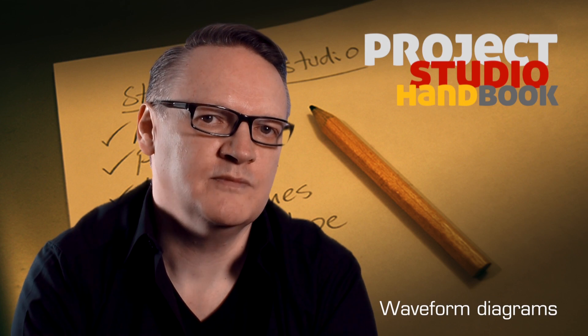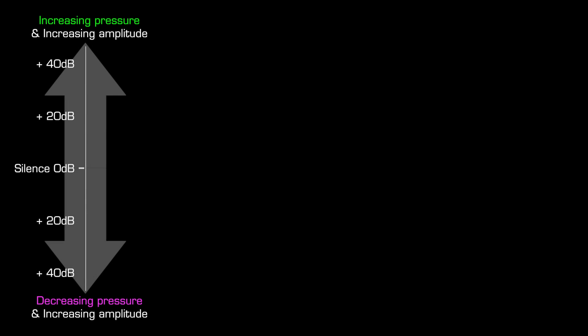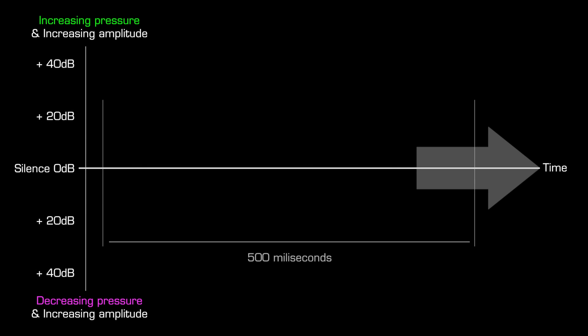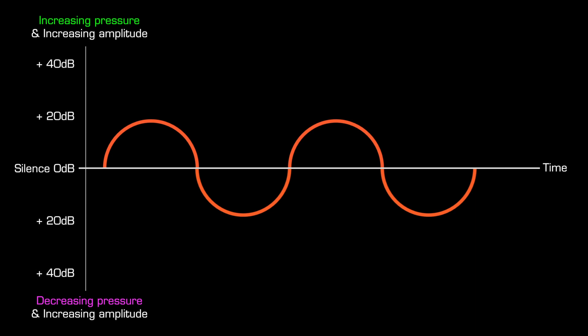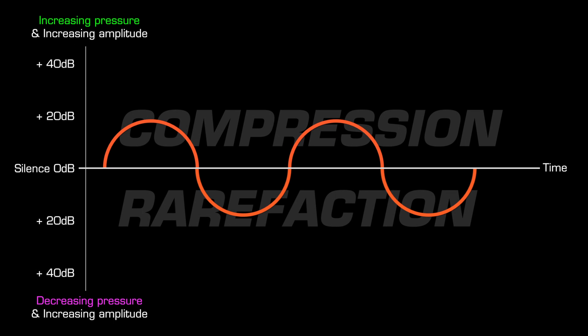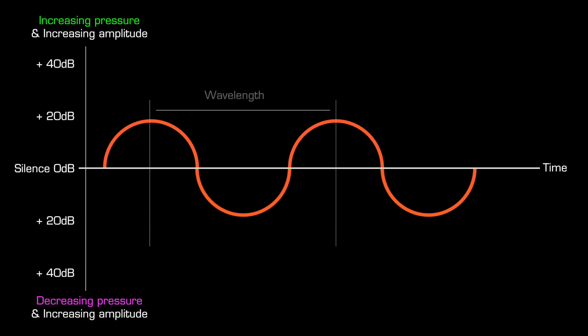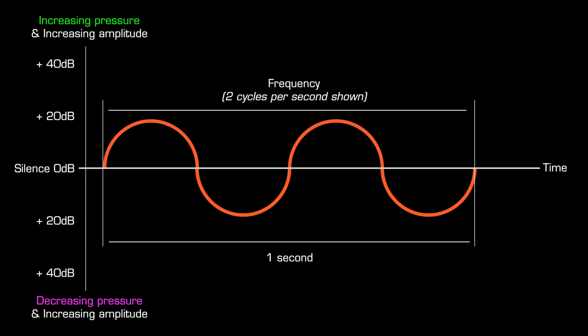Waveform diagrams contain the following elements: a bipolar amplitude axis showing normal air pressure and silence, increasing pressure and increasing amplitude, and decreasing pressure and increasing amplitude. A time axis which can expand and contract to show any duration from a few milliseconds to several hours. A curving line which plots the changing pattern of air pressure energy from compression to rarefaction. One or more cycles. Wavelength. And finally, frequency or the number of cycles per second.